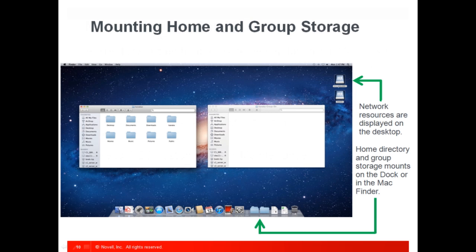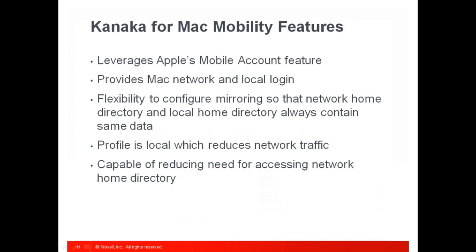This screenshot shows the end user's experience once they've logged in using the Kanaka client or the Kanaka plug-in. Network resources can be displayed right on the desktop, and the home directory and group storage mount points are shown on the dock and also in the Mac Finder. Some of the mobility features included with Kanaka for Mac are: it leverages Apple's mobile account feature, provides Mac network and local login, and has the flexibility to configure mirroring so that the network home directory and local home directory always contain the same data. The profile is local, which reduces network traffic and the need for accessing the network home directory.